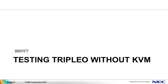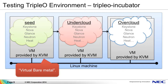Why introduce testing Triple O without KVM? There is a testing script of Triple O called Triple O Incubator. Triple O manages bare-metal, but if you would like to test Triple O, the cost of managing bare-metal is too high, so you will be using a virtual machine to test. Triple O Incubator supports this — it assumes VMs to be bare-metal and builds a Triple O environment on them.